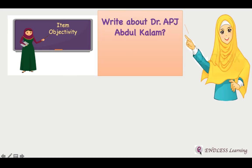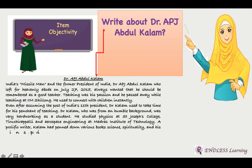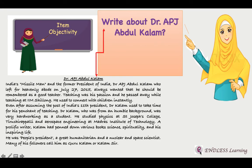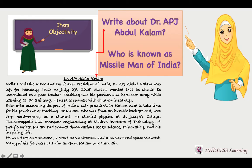For example, if I ask a student to write about Dr. APJ Abdul Kalam, the students will write any number of words and paragraphs, as this question lacks objectivity — the answer will have different perspectives from different individuals. But if I ask 'Who is known as the Missile Man of India?', this question has only one answer and the biasness of the evaluator will not affect the scoring. So all items of the test should be objective.